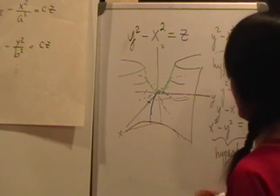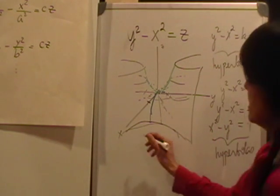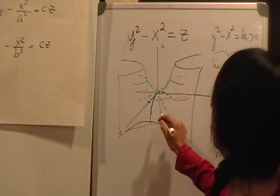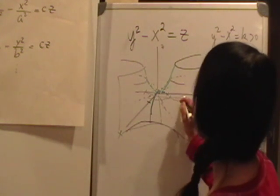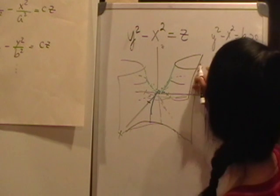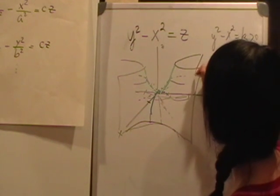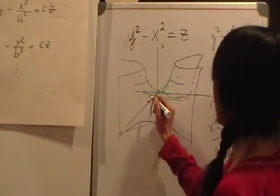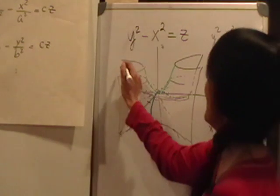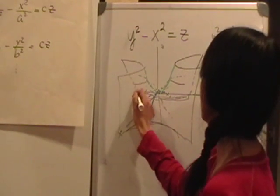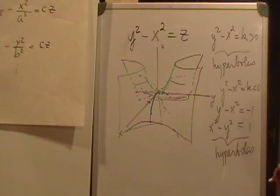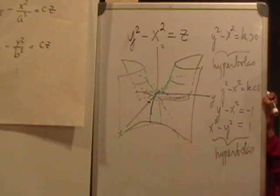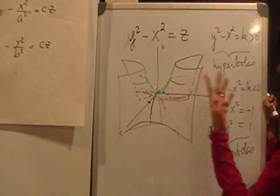At this point I become brave and start connecting everything. I connect this to this and this to this — and there's your saddle. So this is how you draw a rough sketch of the hyperbolic paraboloid, using the traces and cross-sectional hyperbolas.